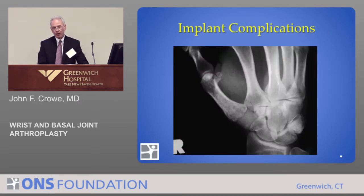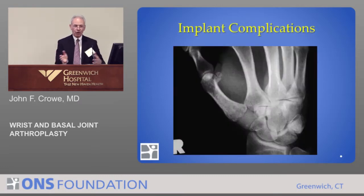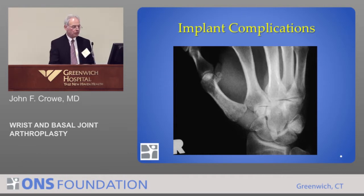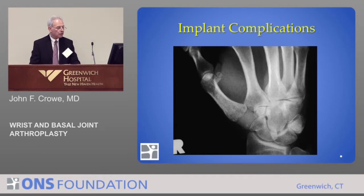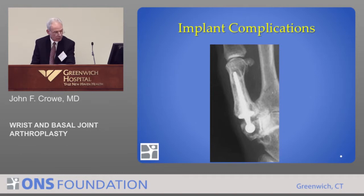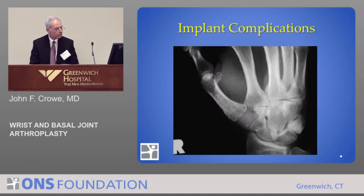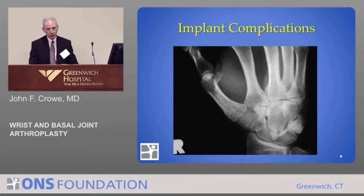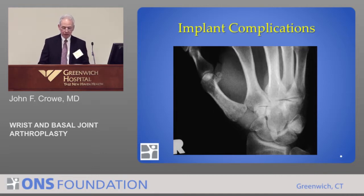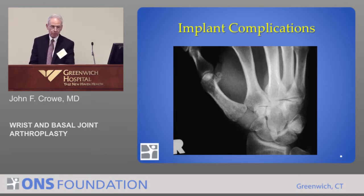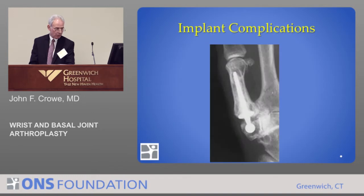I'm going to talk about what we don't do and the reasons we don't do it. Here's a silastic or silicone implant — very good alignment after the procedure, but you see these little dark areas developing? There's a condition called silicone synovitis, which has been well-documented in the hand, and a high percentage of these have to be revised.